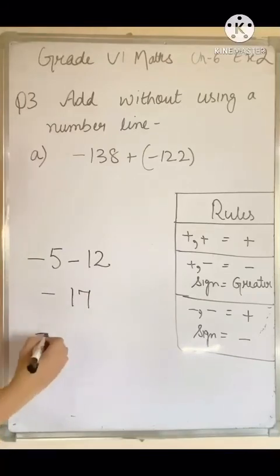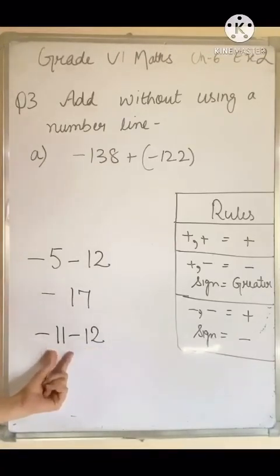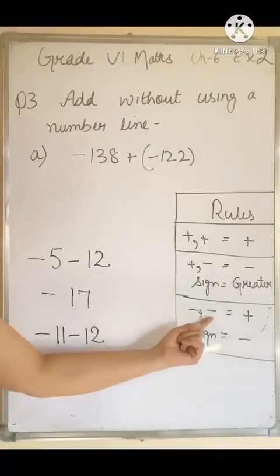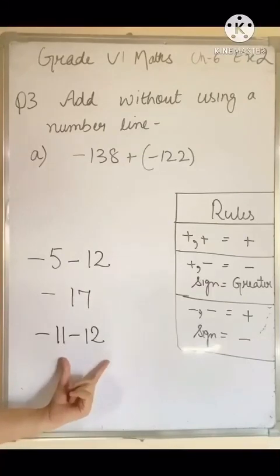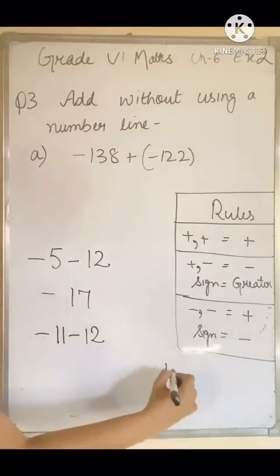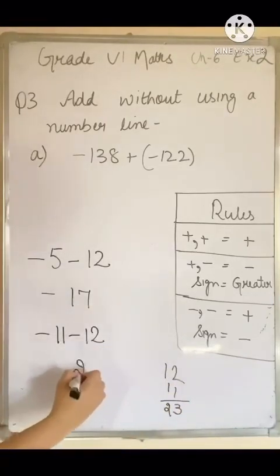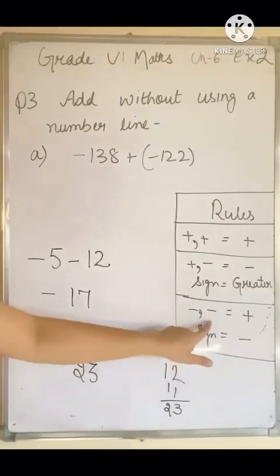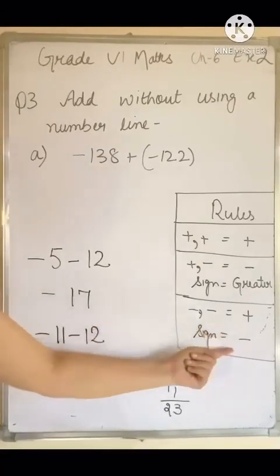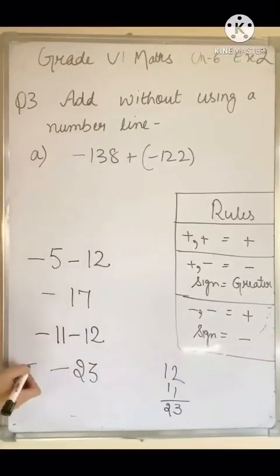Another example: minus 11 minus 12. Both integers have negative signs, so they belong to rule number 3. Minus minus becomes plus, so we add them: 11 plus 12 equals 23. The sign will always be negative, so the answer is minus 23.